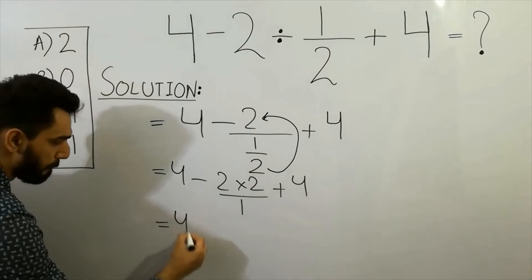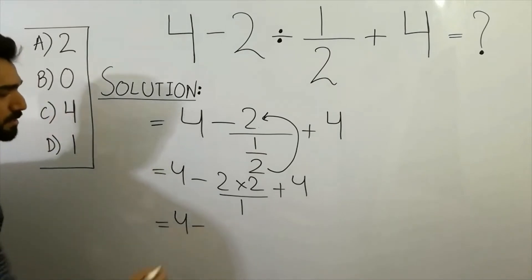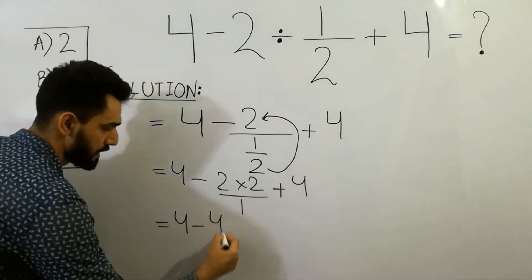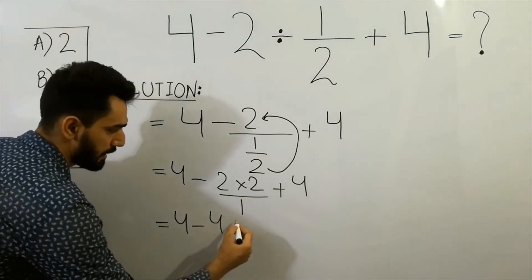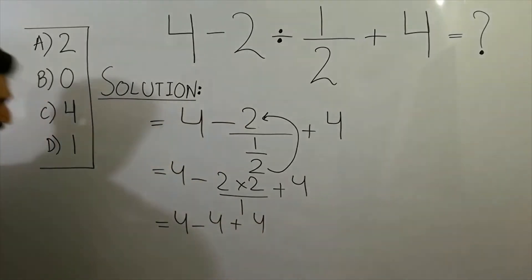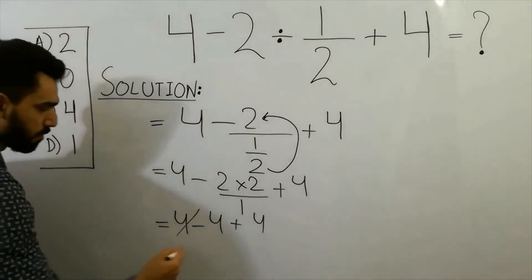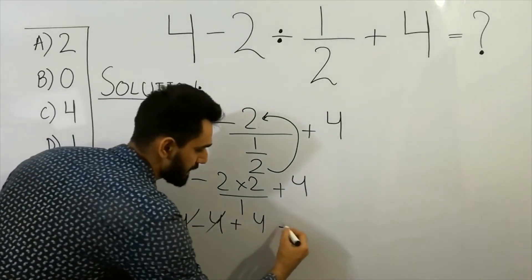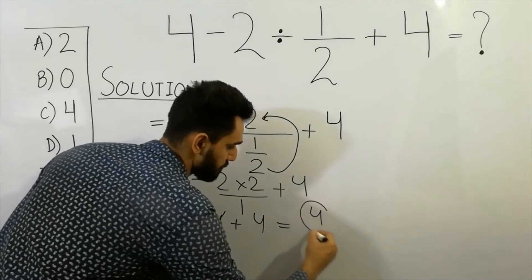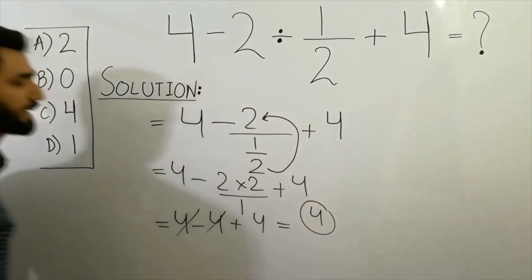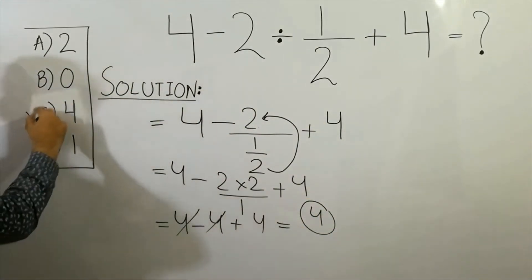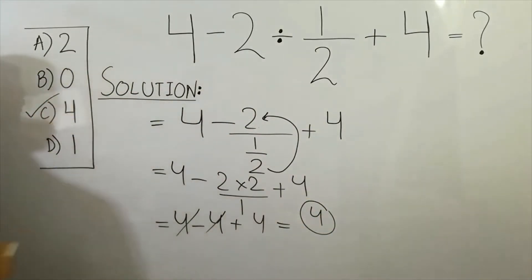Four minus two twos of four, plus four — the fours cancel, and we get four. So four is the correct answer — option C is correct.